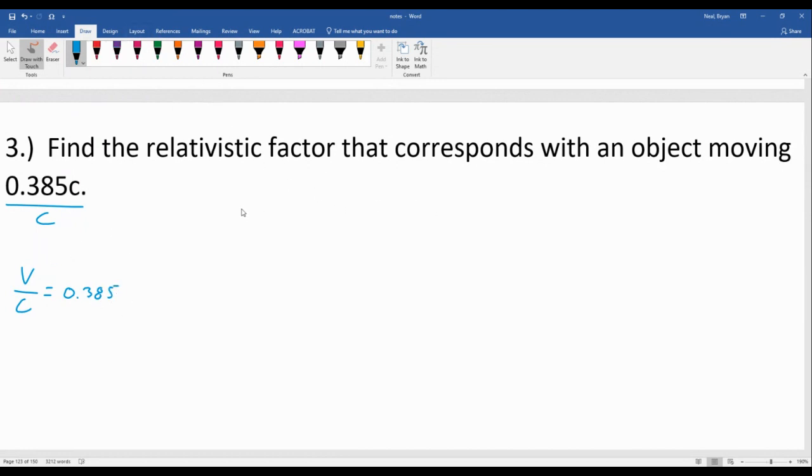Alright, so for this one, the relativistic factor is represented by the Greek letter gamma. And so gamma is 1 over this big square root of 1 minus V squared over C squared.